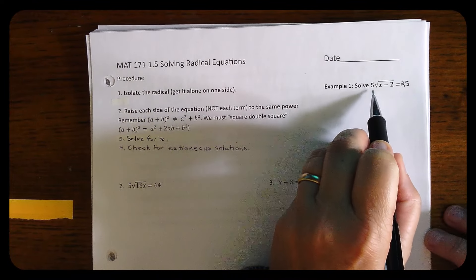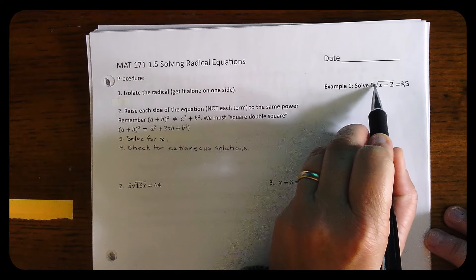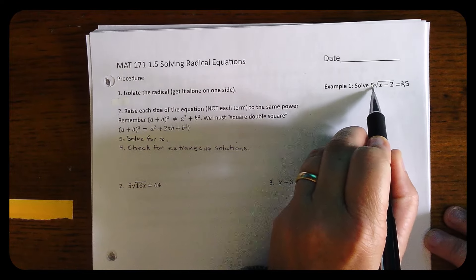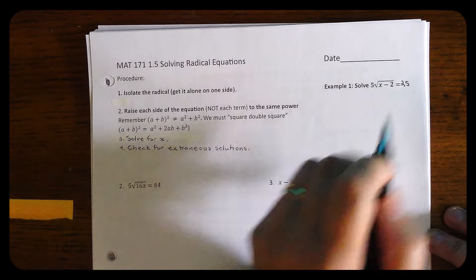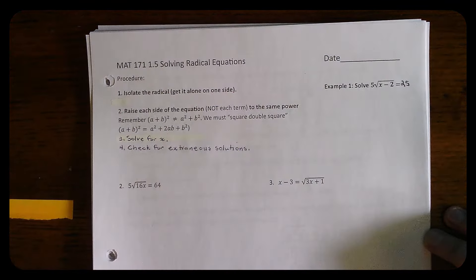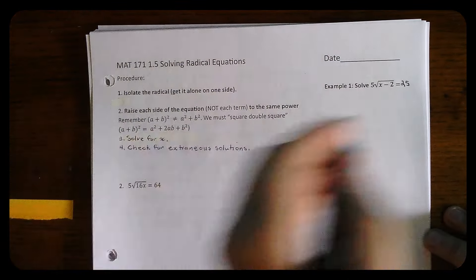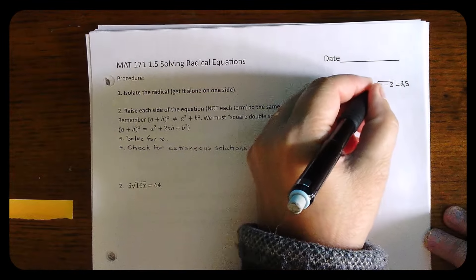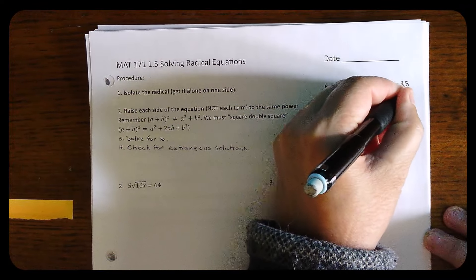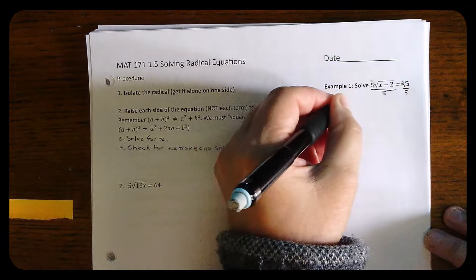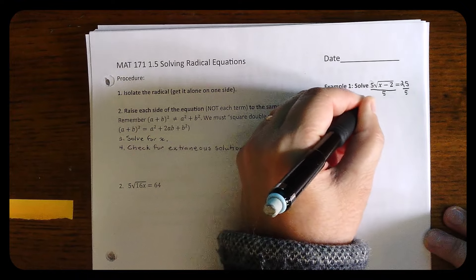In example one, you have five times the square root of x minus 2 equals 25. The operation between the number and the square root is always multiplication. The first thing you need to do is isolate the radical — undo the five by dividing both sides by five. That gives you the square root of x minus 2 equals 5.